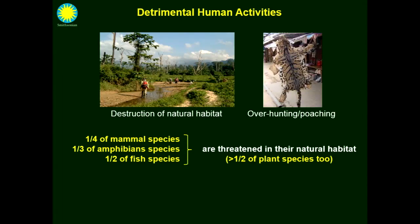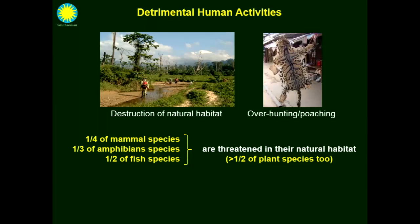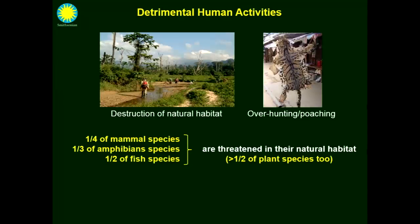We are losing a lot of biodiversity on the planet because of detrimental human activities, especially destruction of natural habitat, but also overhunting and poaching of some species. As a result, a really high proportion of vertebrates are now extinct or threatened in the wild. And it's not only animal species — more than 50% of plant species on the planet are now threatened in their natural habitat.